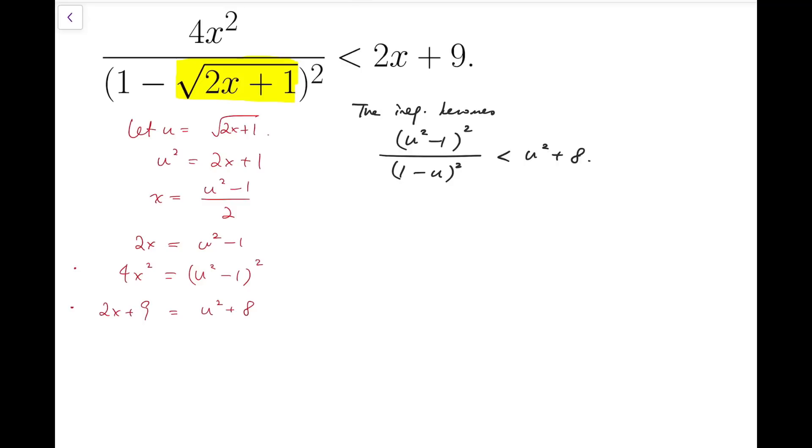Now for left hand side, we turn now to find that there is something that we can cancel out on the numerator and denominator of the fraction. So let me rewrite the denominator to be u minus 1 whole squared. And this whole thing is less than u squared plus 8. So we can cancel out the u minus 1 whole squared and we'll have u plus 1 whole squared.